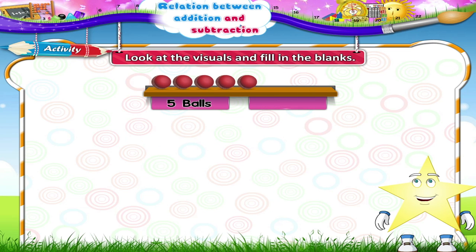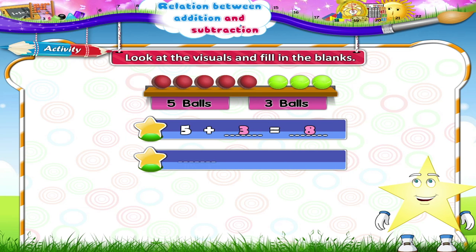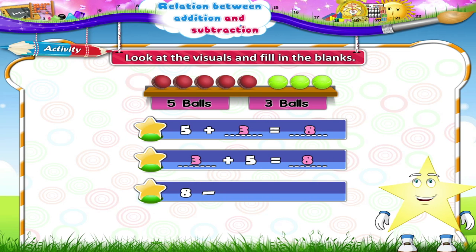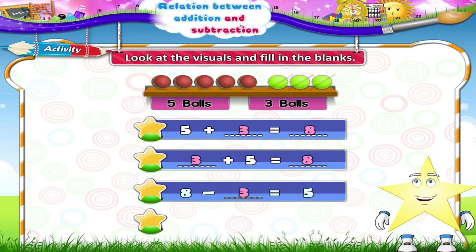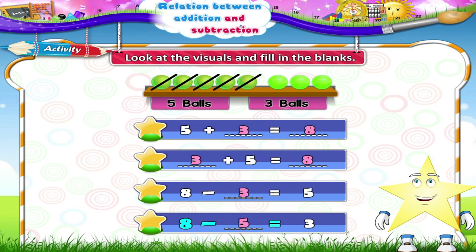5 balls and 3 balls. 5 plus blank equals blank. 5 plus 3 equals 8. Blank plus 5 equals blank. 3 plus 5 equals 8. 8 minus blank equals 5. 8 minus 3 equals 5. 8 minus blank equals 3. 8 minus 5 equals 3.